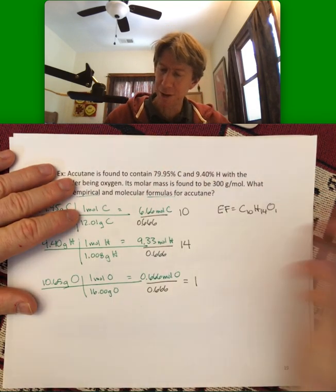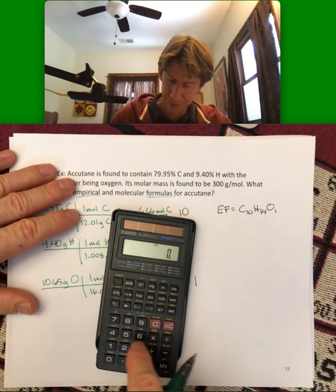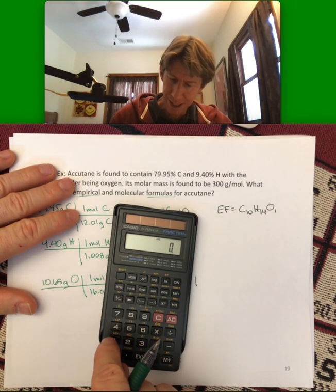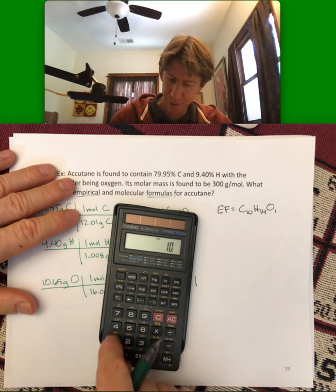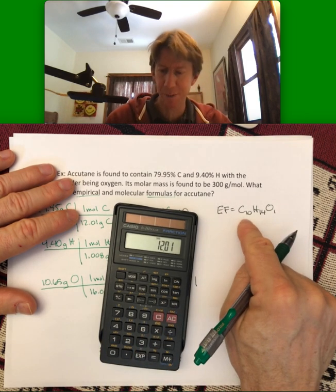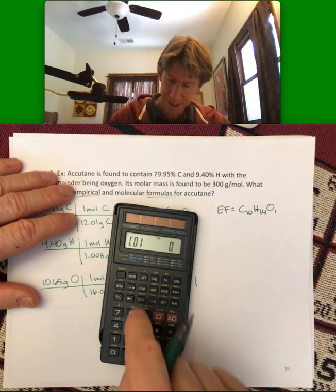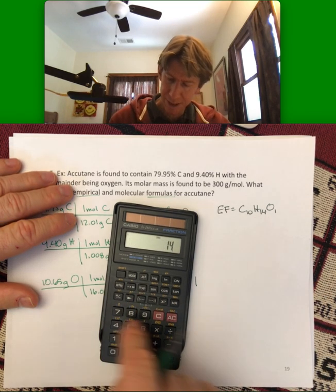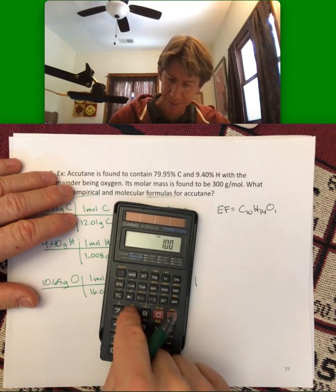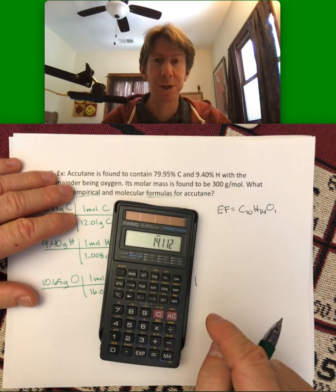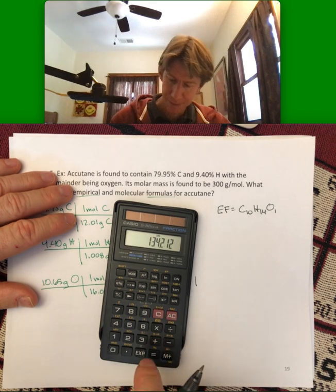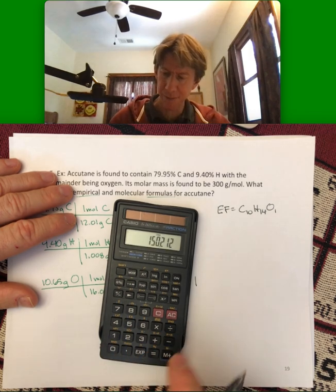Now, let's find the molar mass of this. So, 10 times 12.01, that's going to be my carbons. Plus, I'm going to use my parentheses here, 14 times 1.008, which is just a little over 14. Plus, 16 for the 1. I get 150.